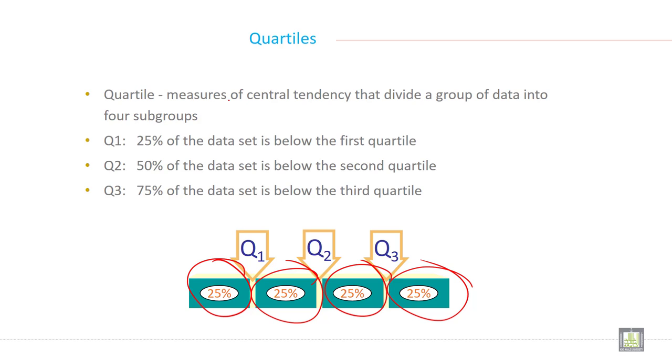Quartile is a measure of central tendency that divides a group of data into four subgroups. First quartile, symbolically written as Q1, means 25% of the data set is below the first quartile.